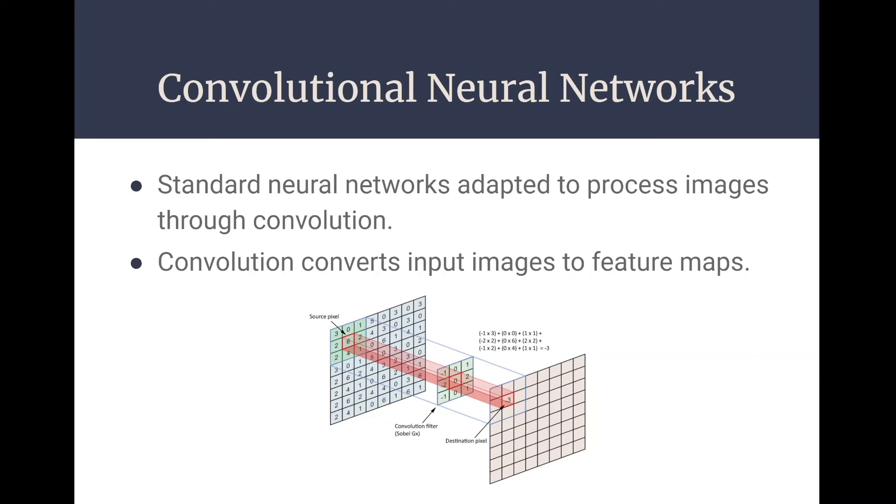The method used for object detection was the convolutional neural network. Basically, this method is a standard neural network which has been adapted to process images through convolution. And what exactly is convolution? Convolution takes a section of an input image, like this section here for example, and multiplies that section by a convolutional filter, or kernel, which is just a small matrix of specific selected values designed to draw out certain object features.